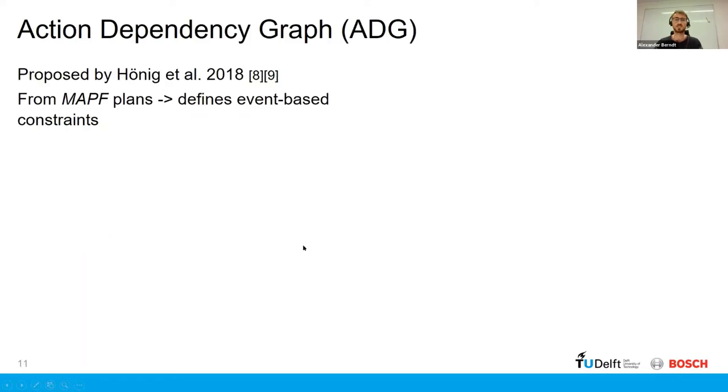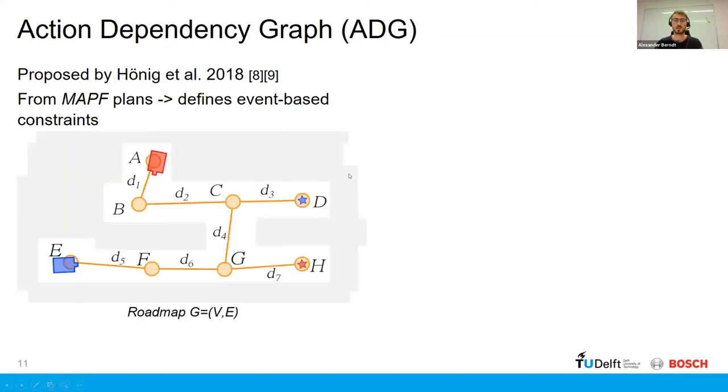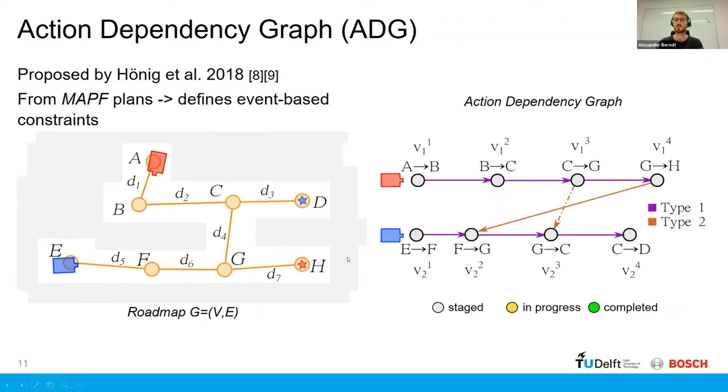So first, the action dependency graph. This is a concept presented by Honig et al. in 2018. And the idea is that you take a MAPF plan and you extract the kind of the event-based constraints thereof. So if we look at a simple example to illustrate this, we have two AGVs, a red and a blue, with the corresponding goal marked by the star.